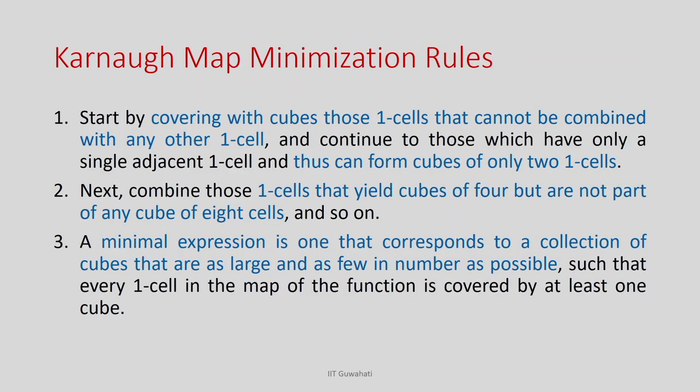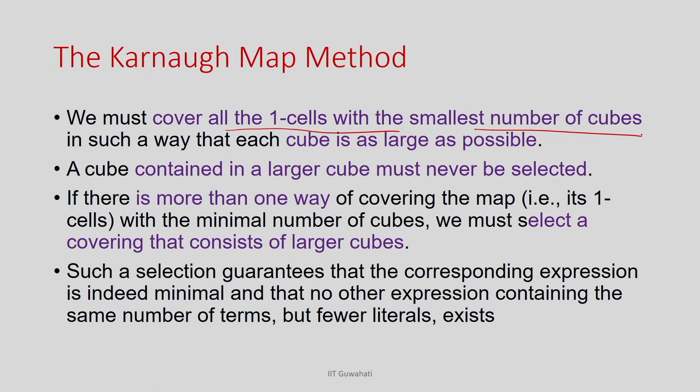Once we have the map, we can combine two adjacent product terms to form a cube. If we can combine two adjacent 1s, then we create a cube of size 2. If we can combine four adjacent 1s, then we can create a cube of size 4, and so on — a cube of size 8 and so on. What Karnaugh Map does effectively is that our objective is to cover all the 1s present in a function with minimum number of cubes, because each cube results in a product term.